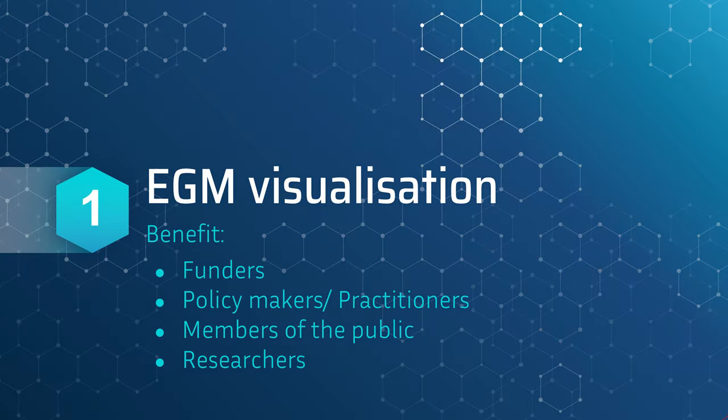A key feature of an evidence and gap map is showing very importantly where the gaps are on a specific topic. I don't have a lot of time to go into all the benefits today, but I will focus on the benefits of visualising research through the Evimapper package. Through mapping and a visual presentation of all the existing and emerging evidence on a particular topic across relevant outcomes, it's possible to graphically highlight the gaps in evidence and the areas in which there is sufficient research for evidence synthesis.